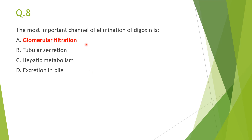Question 8: the most important channel of elimination of digoxin is A — glomerular filtration. Digoxin is primarily excreted unchanged by the kidney through glomerular filtration.